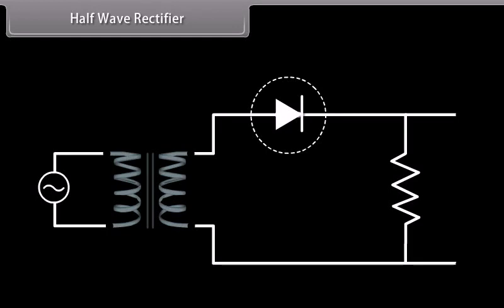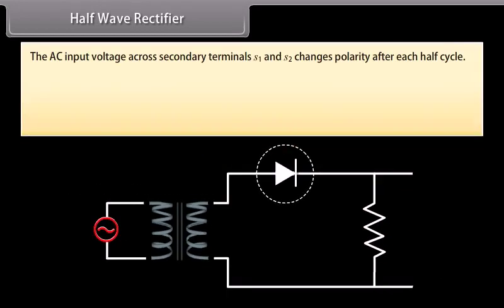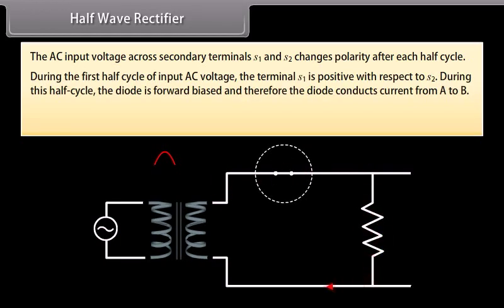Half-wave rectifier: the AC signal to be rectified is connected across the primary terminals P1 and P2 of a step-down transformer. One of the secondary terminals S1 is connected to the P-region of the junction, while the other secondary terminal S2 is connected to the N-region with a load resistance RL in series. The output voltage is taken across the load resistance RL. The AC input voltage across secondary terminals S1 and S2 changes polarity after each half cycle. During the first half cycle of input AC voltage, terminal S1 is positive with respect to S2. During this half cycle, the diode is forward biased and conducts current from A to B.